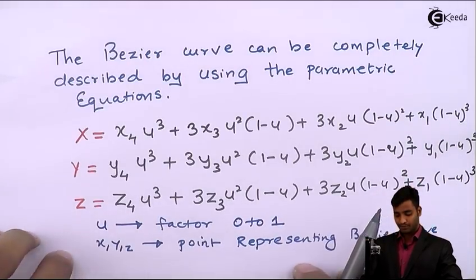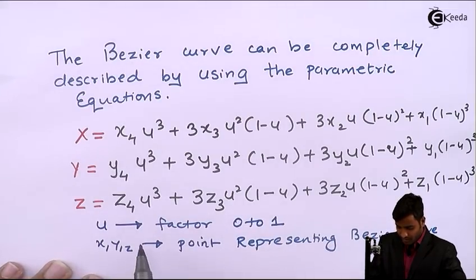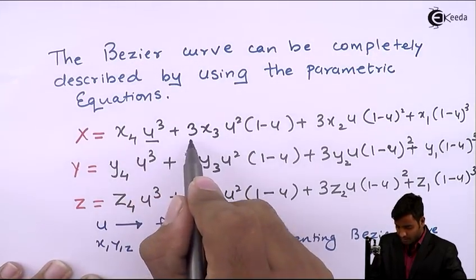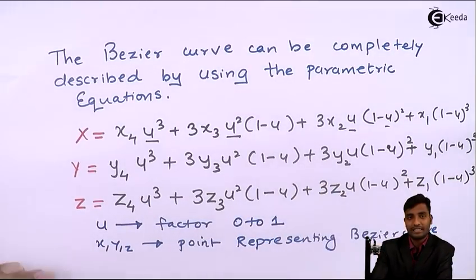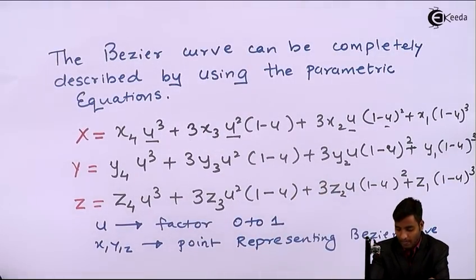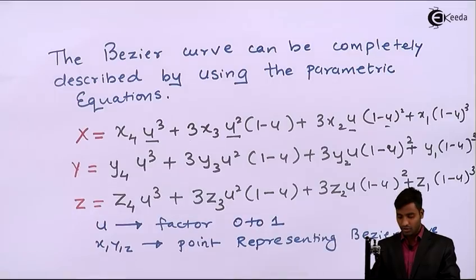These are the parametric equations for X, Y, Z, where u is a factor that increases from 0 to 1 as the curve progresses from the first control point to the last control point.